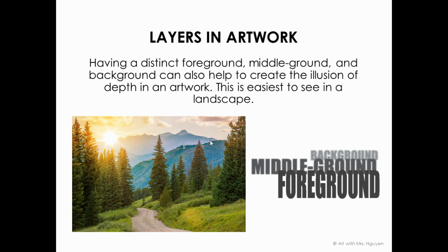You can also see that there are layers in artwork. We usually refer to these as the foreground — the things closest to the front — the middle ground, and the background, which is farthest away. Objects in the foreground look very large and detailed. As we move to the middle ground, they appear a little smaller and less detailed. And way in the background, the trees almost look like carpet on the mountainside — you're not really seeing distinct shapes anymore.